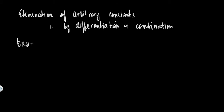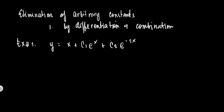Example number one. Let's say y equals x plus c1*e^x plus c2 times e^(-2x). As you can see there are two arbitrary constants here, so we need to differentiate the equation two times.